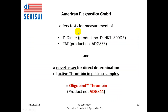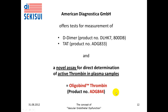American Diagnostica GmbH offers tests for measurement of these parameters. For example, product number DLHK7-800, a product for measurement of D-dimer; or product number ADG833, which is an assay for measurement of thrombin-antithrombin complexes. Very importantly, American Diagnostica has developed a novel assay for direct determination of active thrombin in plasma samples. This assay is called Oligobind Thrombin, with product designation ADG844, and it is the first assay that allows determination of active thrombin in a plasma sample rather than measuring the consequences of thrombin generation.